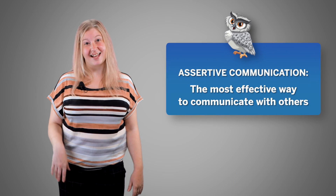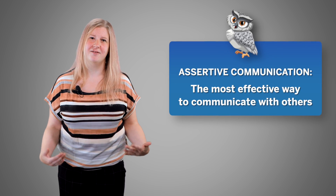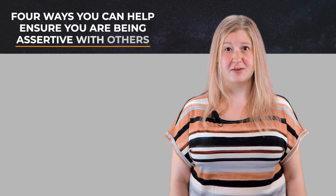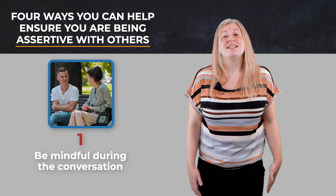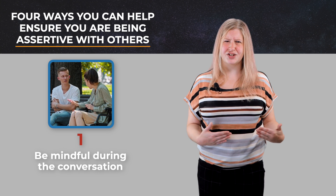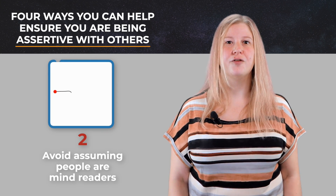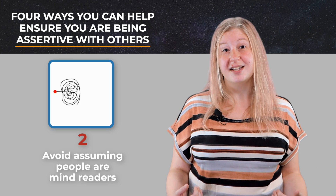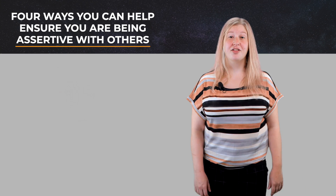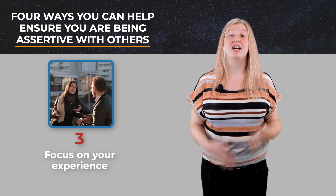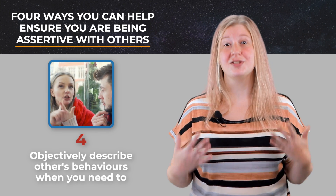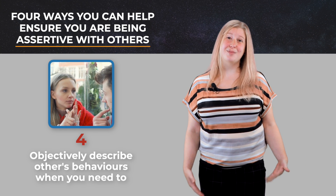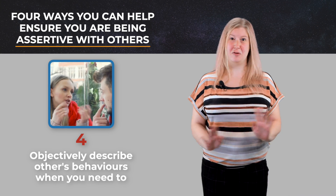Let's do a quick review. The most effective way to communicate with others is to be assertive. Here are the four strategies again. First, be mindful during the conversation — listen carefully to what the other person is saying and pay attention to how and where the conversation is going. Second, avoid assuming people are mind readers; state your feelings and needs clearly because people are less aware of them than you think. Third, focus on your experience and share how you feel about a situation rather than focusing on the other person's behaviour. And fourth, objectively describe others' behaviours when you need to — do your best to describe exactly what happened, as accurately as you can, without including your interpretation.